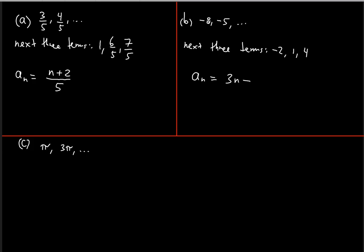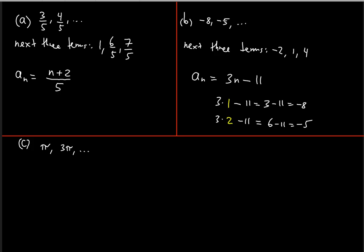We need to subtract enough to start from negative eight instead of three. The distance from negative eight to zero is eight, and from zero to three is three, so three plus eight equals eleven — we subtract eleven. Checking: three times one minus eleven equals three minus eleven, which is negative eight. Three times two minus eleven equals six minus eleven, which is negative five — precisely the second term. This works.